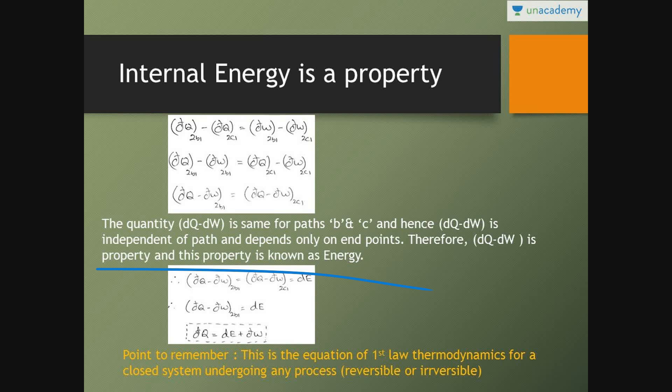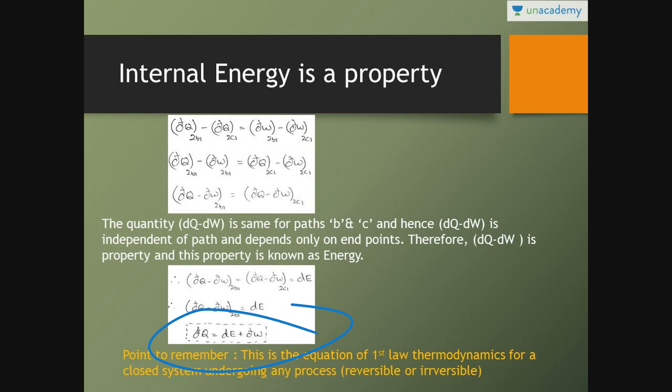We call this quantity energy, E. Therefore, DQ minus DW equals dE, which gives us DQ equals dE plus DW. This is the equation of the first law of thermodynamics for a closed system undergoing any process. This equation is valid for any process — reversible as well as irreversible. If we substitute DW equals P·dV, that is valid only for a reversible process.